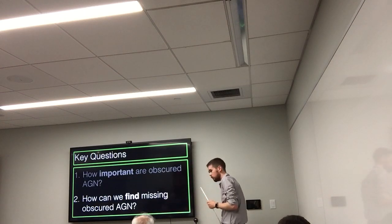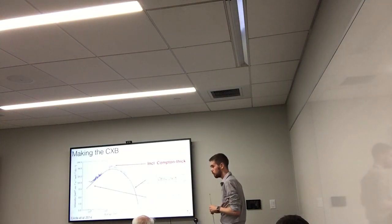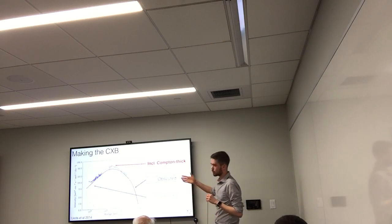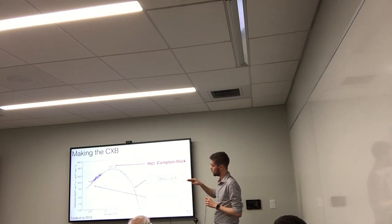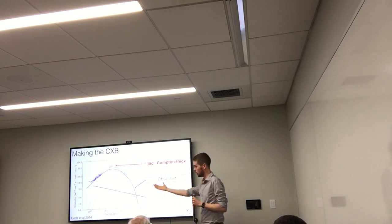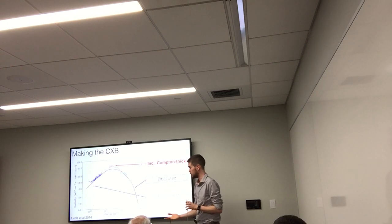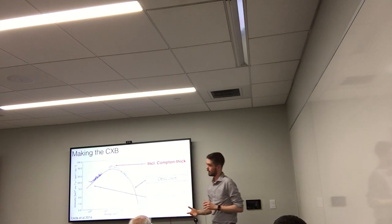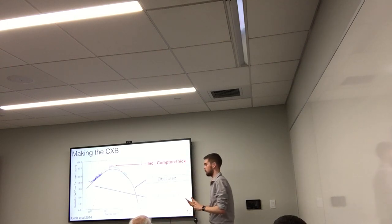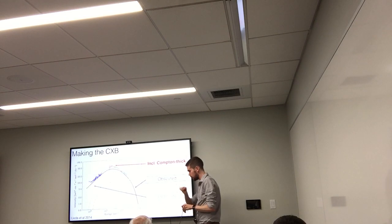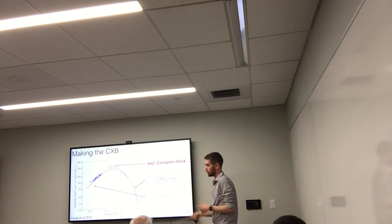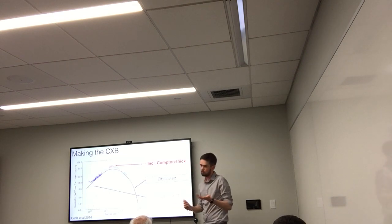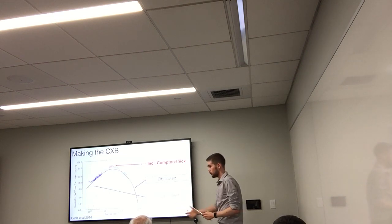A question was raised: does the previous graph not constrain the Compton thick fraction more than that? This graph used as a prior the column density distribution from hard X-ray selection, where bias corrections are used to predict what the intrinsic column density distribution should be — but those are bias corrections that assume a model that may be incorrect or at least should be checked.